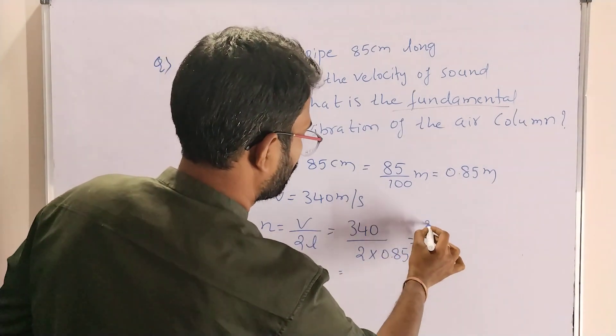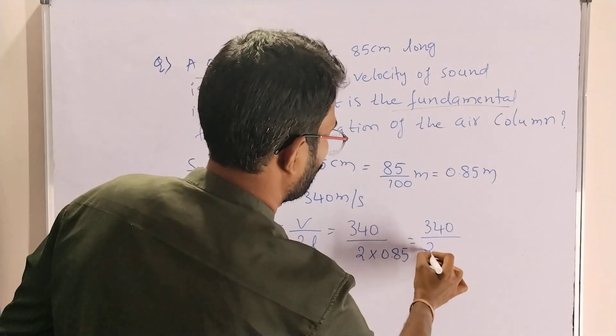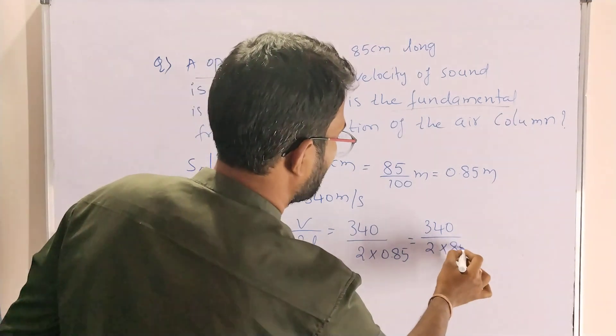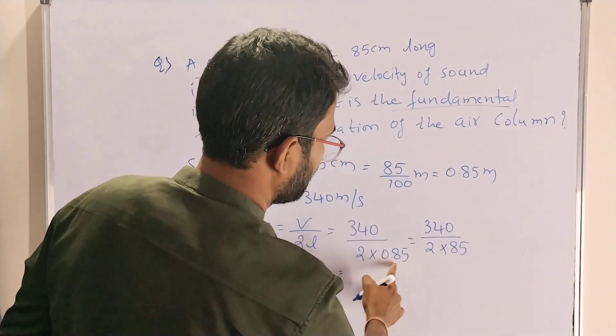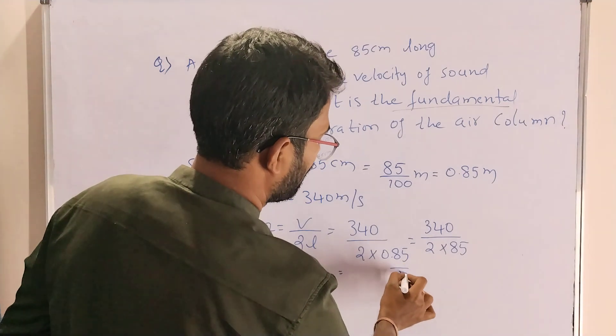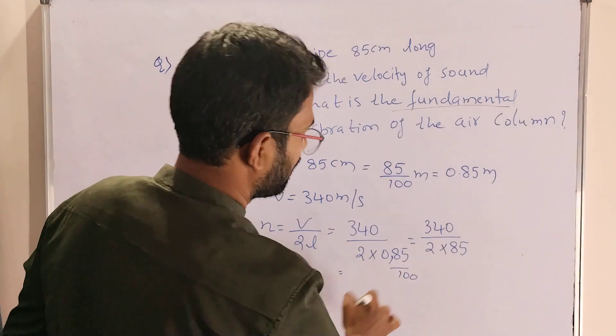Equals 340 by 2 into 85, 85 divided by 100. By 100 we can take and we can cancel. 85 by 100, this 100 will be in the numerator.